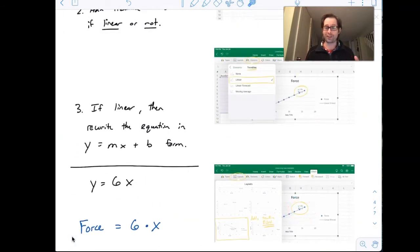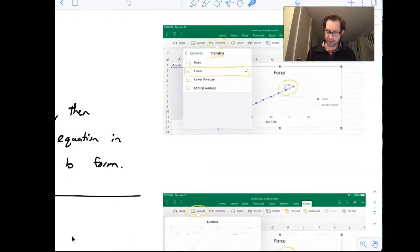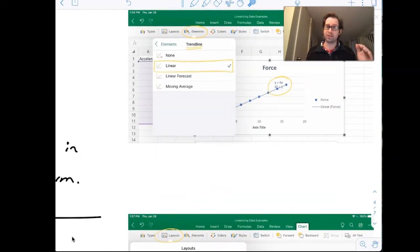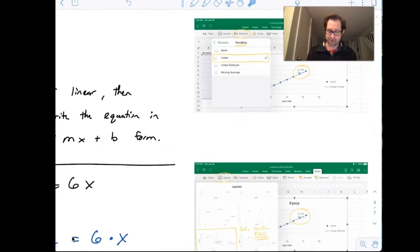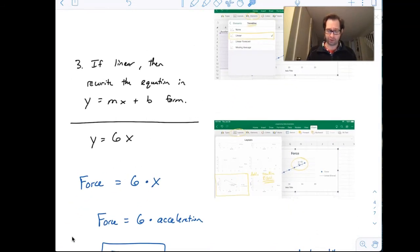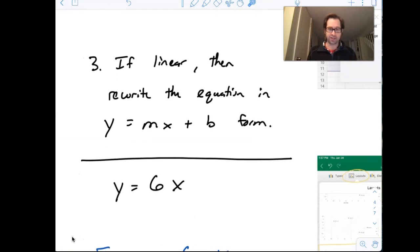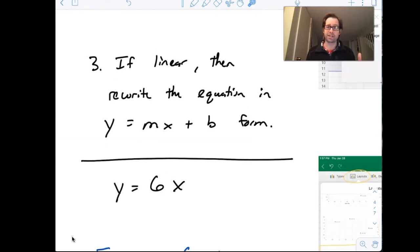And then you can see how linear it is. Now in this case, we're very linear. Our r square value, when I did the trend line was one, that's as linear as you can get. So if that comes out to be close to one, you know you're on the right track.